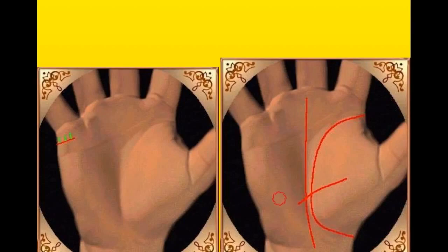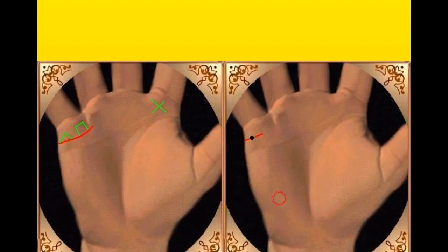If on marriage line is a triangle or square and on Jupiter mount a cross, in marriage and spiritual life there will be success and money.